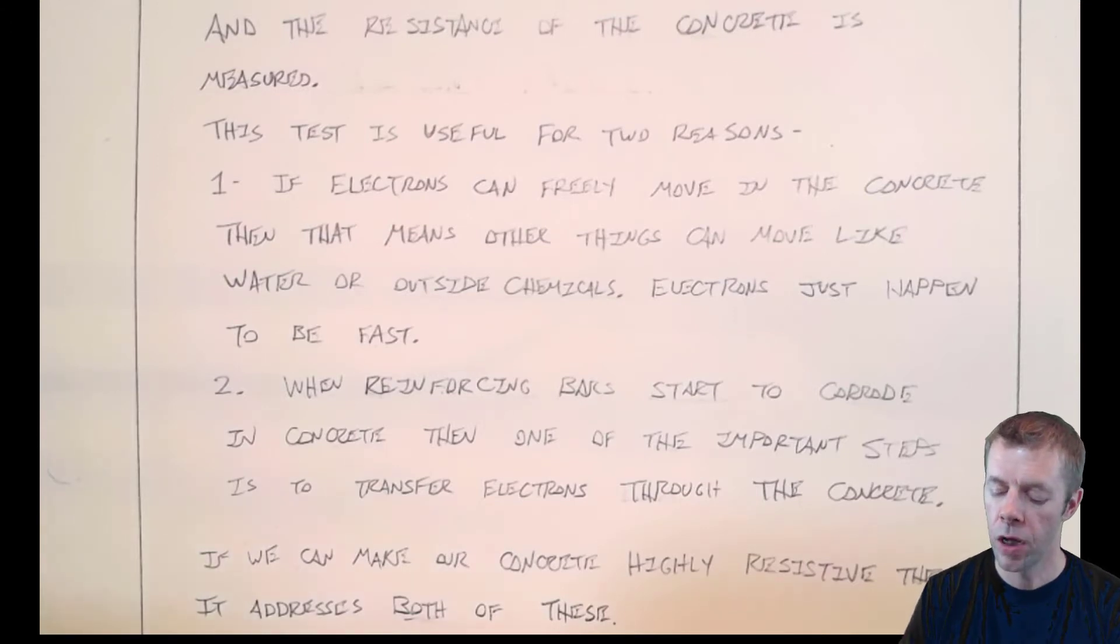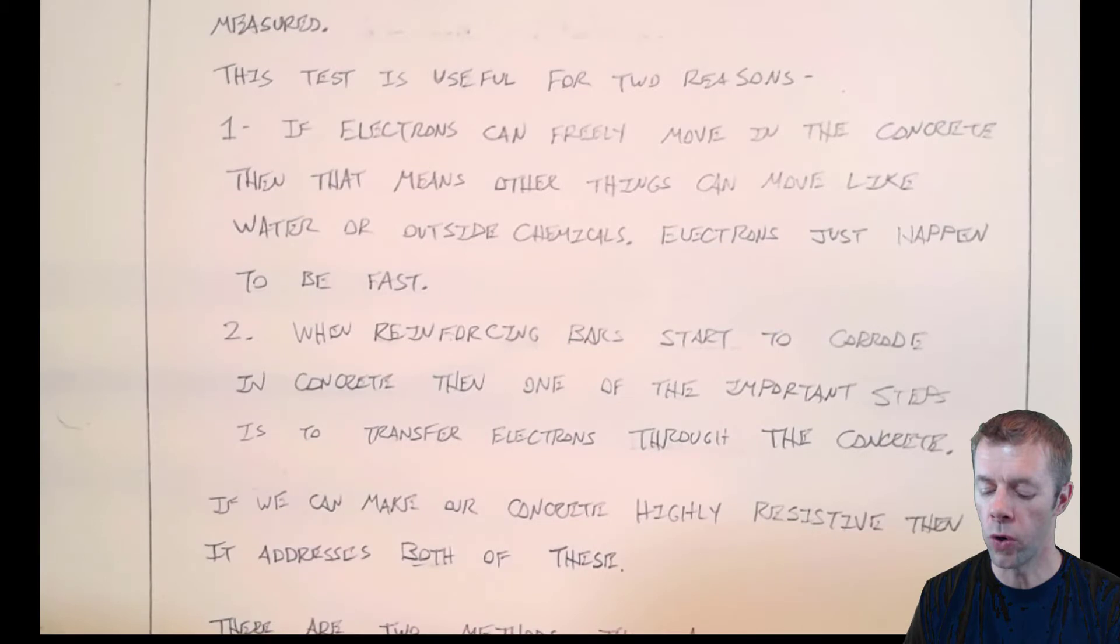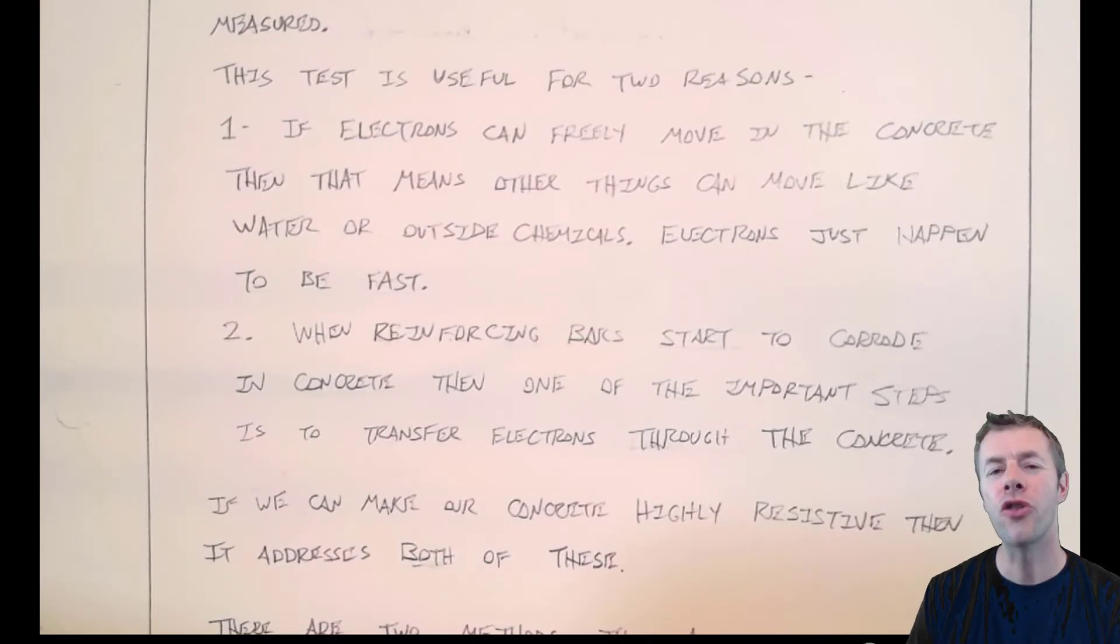There's two main reasons why you would use this test. And I just mentioned number one. That's, again, if electrons can move quickly, that's not good concrete. That means water and other ions can. But there's another good reason. When your reinforcing bars start to corrode, then one of the important steps in that process is actually to transfer electrons through the concrete. So if you can make concrete with a high resistance, then once your reinforcing bars start to corrode, they'll corrode at a much, much slower rate. Because the electrons had a harder time moving around. It's because these two reasons make this test very useful and very helpful to look at the durability of concrete.